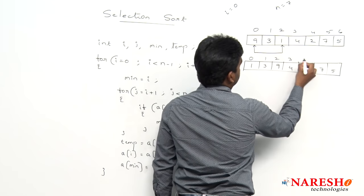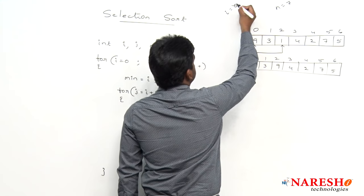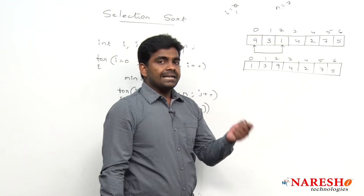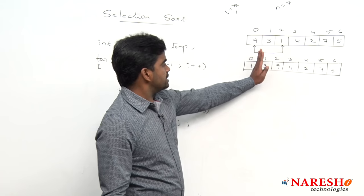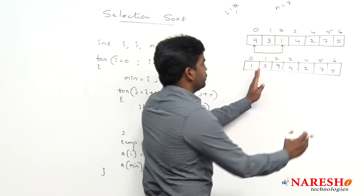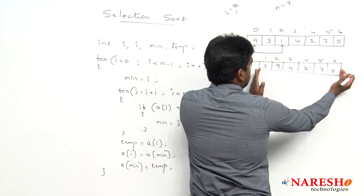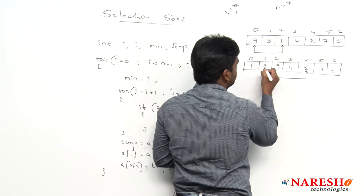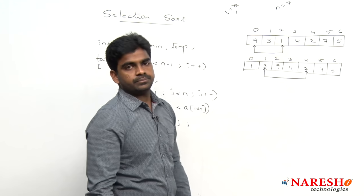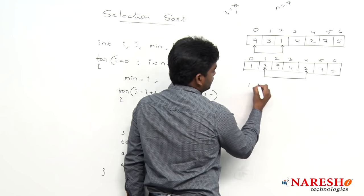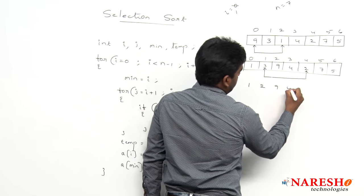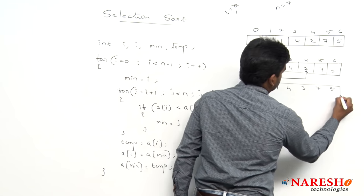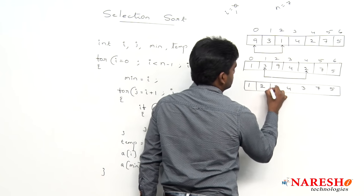Next, when i value becomes 1, we need to find the second least element. The first position is already completed. We find the minimum element in the remaining array, and swap the index element with that minimum element. So 2 will come to index 1, and 3 will go to where 2 was. 7 and 5 remain.